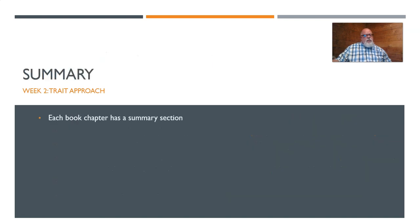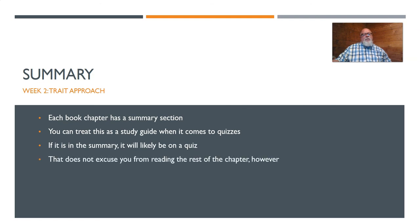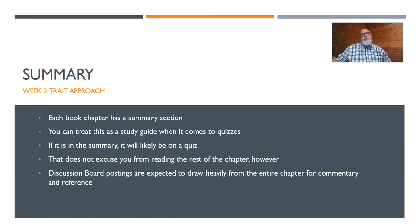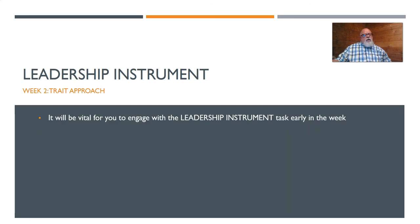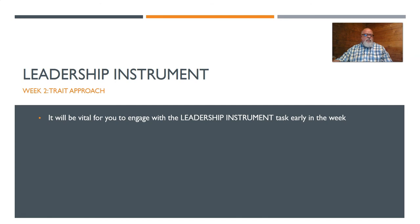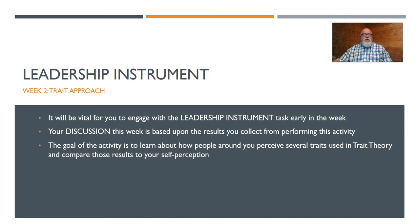For your summary reminder: each chapter has a summary section that's your best study guide for quizzes. If it's in the summary, it's likely going to be on a quiz. That doesn't excuse you from reading the whole chapter, because you'll need to rely heavily on the chapter content for your discussions and for your final paper. Now let's talk about your activity this week — the leadership instrument. The discussion this week will be based on the results you collect: learning how people around you perceive several traits used in trait theory, and comparing those to your own self-perception.